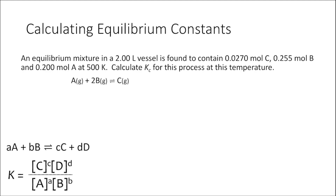To start this problem, we write our equilibrium constant expression: Kc equals the concentration of our products raised to their respective coefficients — in this case, coefficient of 1 — divided by the concentration of our reactants raised to their respective coefficients. That's the concentration of A to the first power multiplied by the concentration of B squared, because there's a coefficient of 2 in front of B in this balanced chemical equation. We need concentrations in units of molarity, and notice that unlike the previous problem, we're given moles in a 2-liter vessel, so we need to calculate molarity for each component.